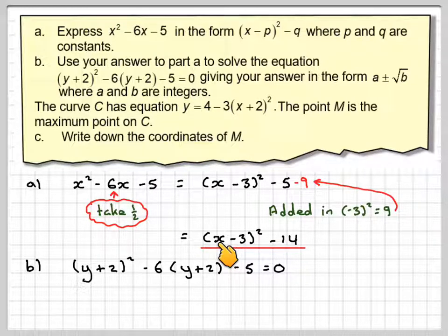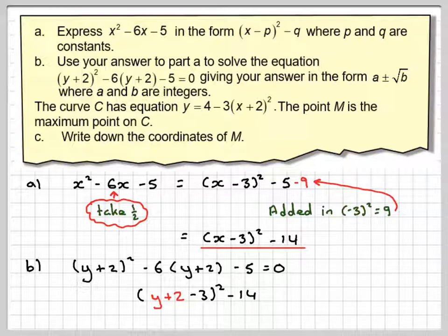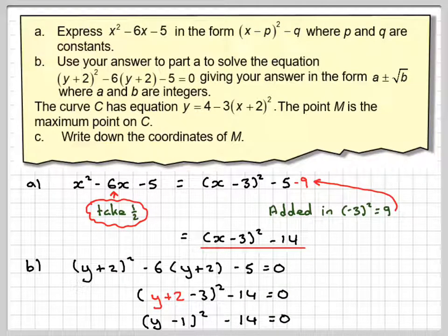So that becomes (y + 2), still got the -3 all squared, -14 = 0. Using our rules of solving equations, the opposite of -14 is to add 14. Just one thing first, we've got y + 2 - 3, we simplify that to y - 1.